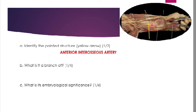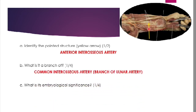That nerve is known as the anterior interosseous branch of the median nerve. The second part of the question asks what it is a branch of. The anterior interosseous artery is a branch of the common interosseous artery, which in turn is a branch of the ulnar artery. The common interosseous artery is the largest branch of the ulnar artery and it arises in the cubital fossa.